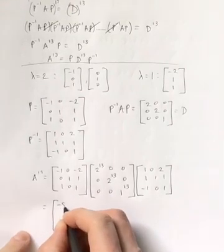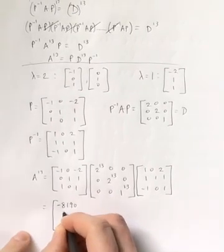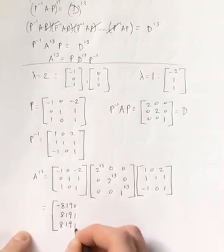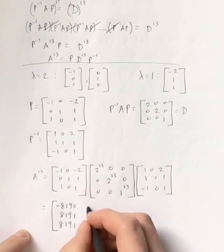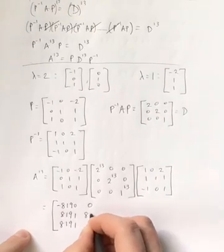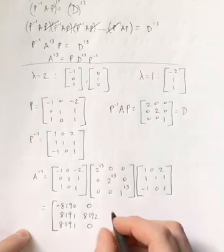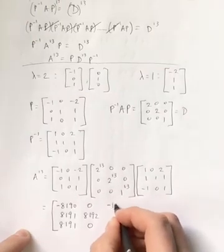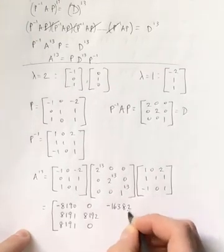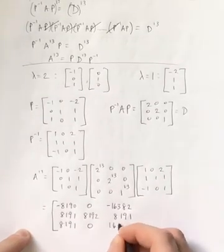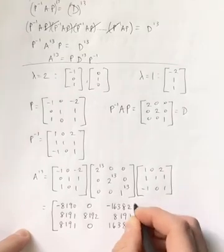So the first column is negative 8190, 8191, 8191. The second column is 0, 8192, 0. And the last column is negative 16,382, 8191, and 16,383.